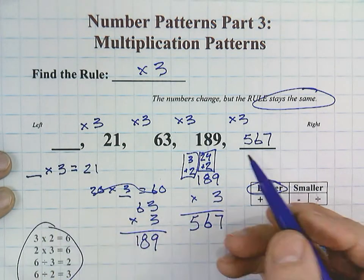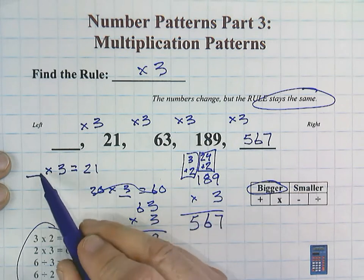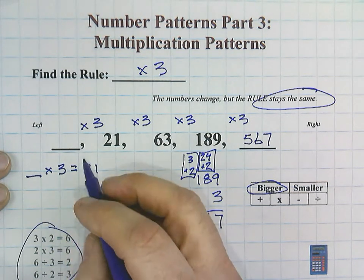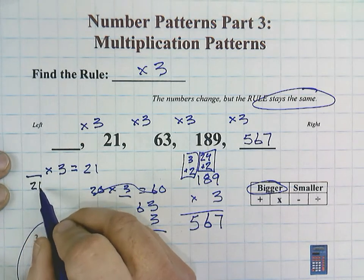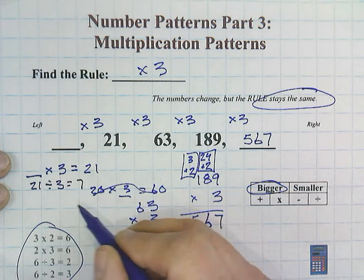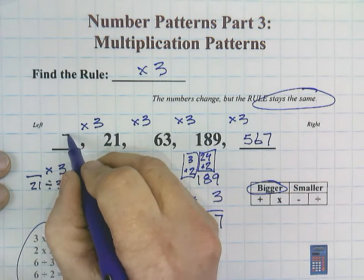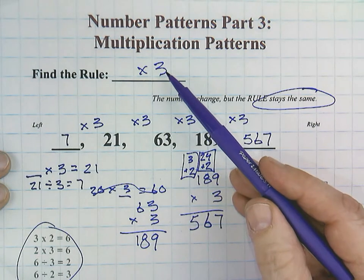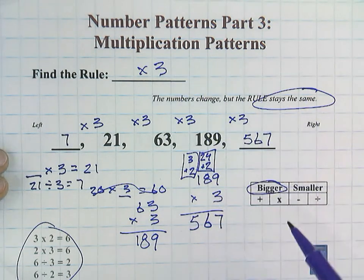blank times 3 equals 21. You could also use your knowledge of fact families. Remember, the fact families use the same three numbers, and that can be used for multiplication or division. So we could also divide: 21 divided by 3. And if you work that through, that's going to be 7. So our rule for this multiplication pattern is times 3.